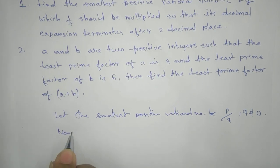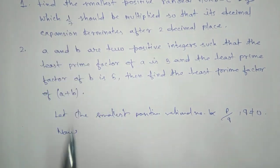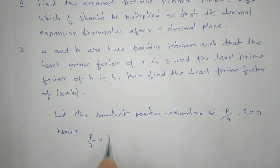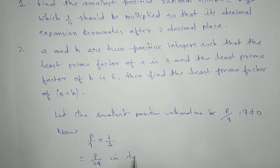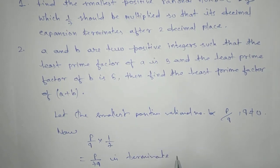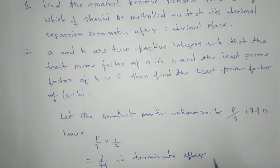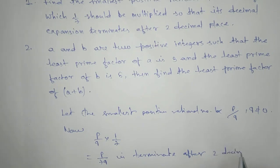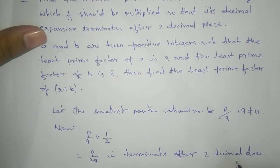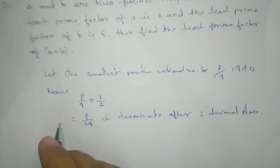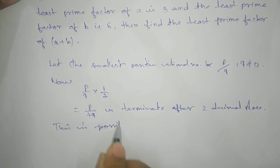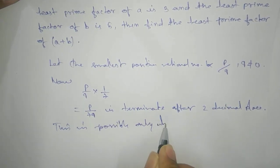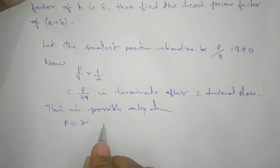Now what they are saying is that p/q should be multiplied by 1/7, and that product will terminate — that means p divided by 7q terminates after two decimal places.